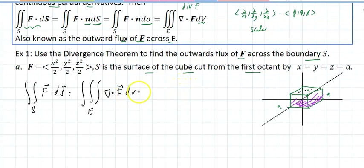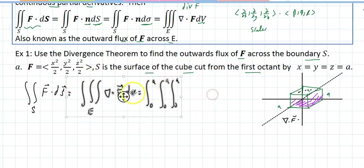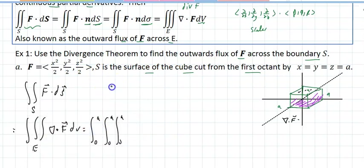Well, let's get that out of the way. That is the integral from 0 to A, 0 to A, and 0 to A. Of what? What is del dotted with F? That is the partial with respect to X, the partial with respect to Y, the partial with respect to Z.